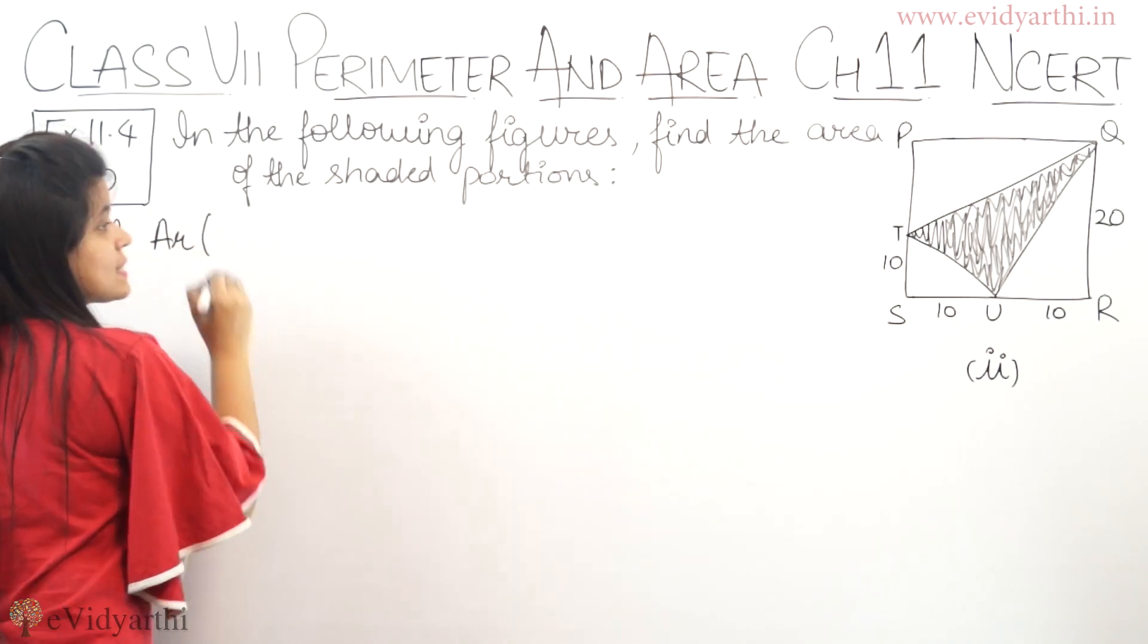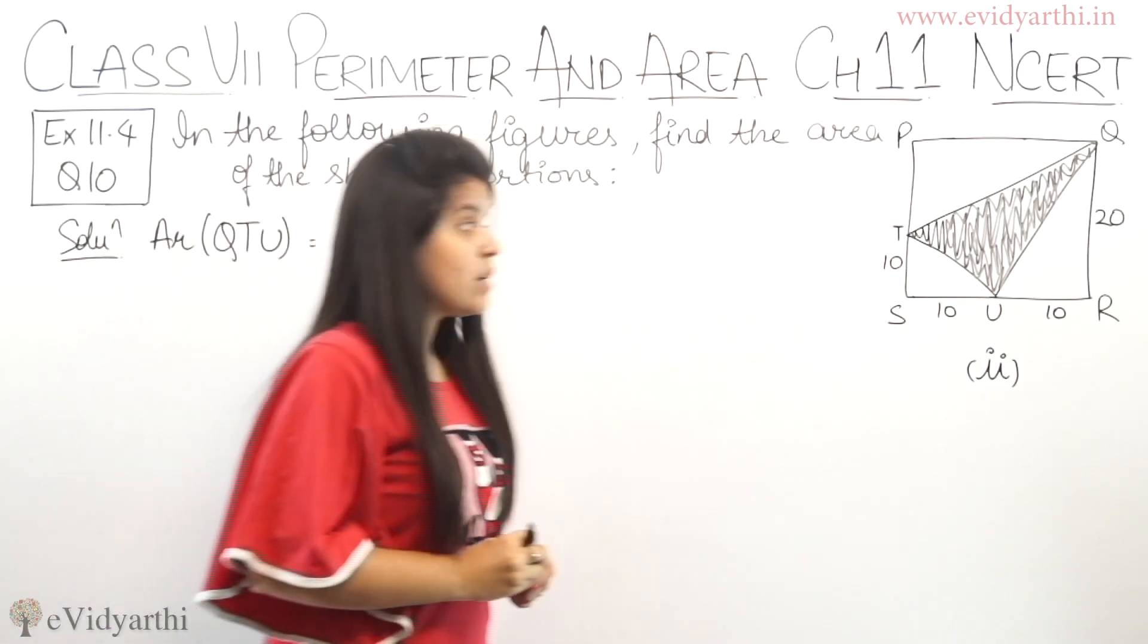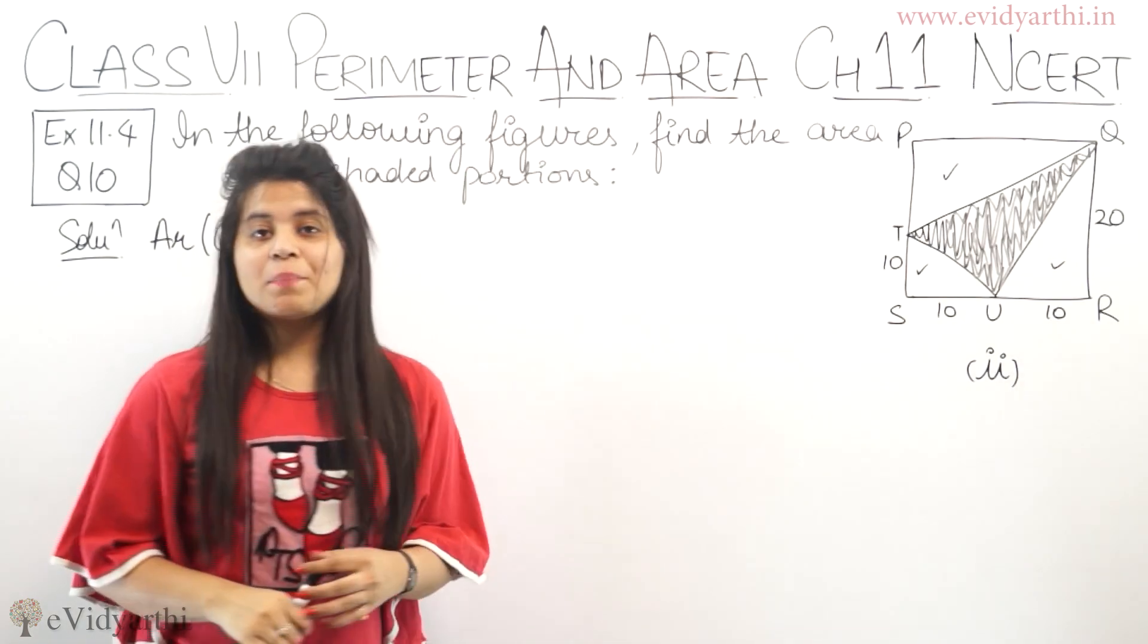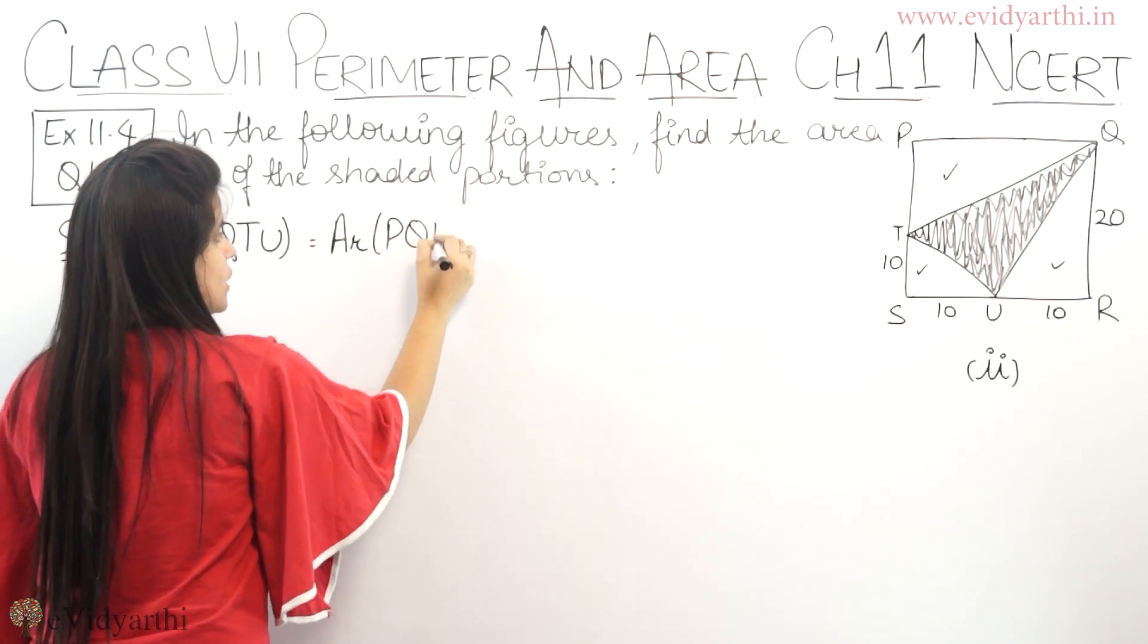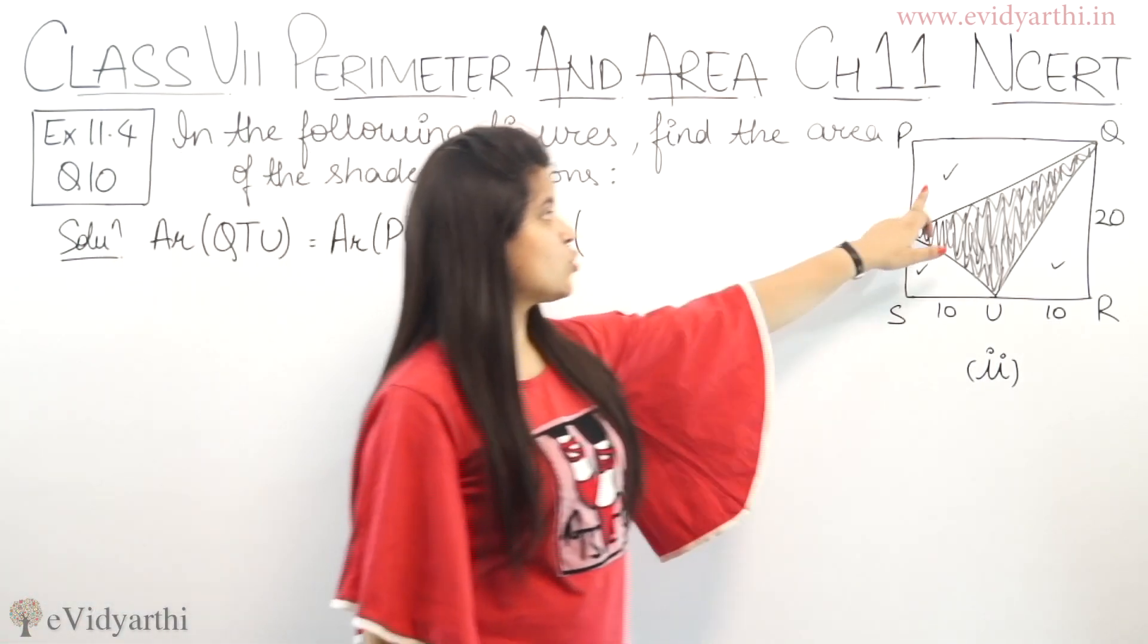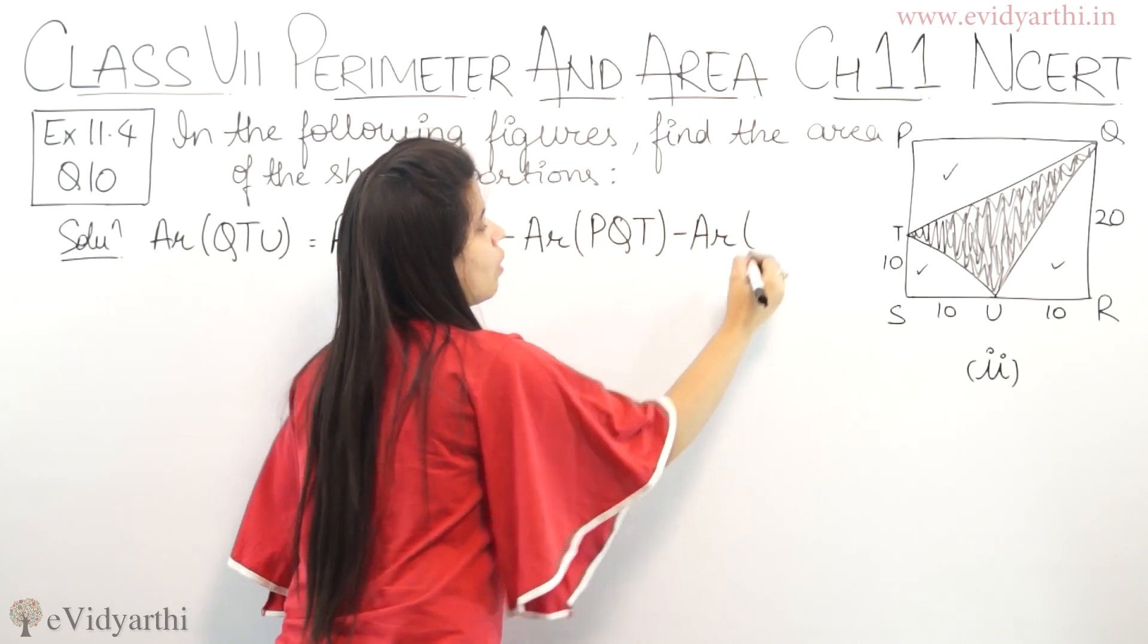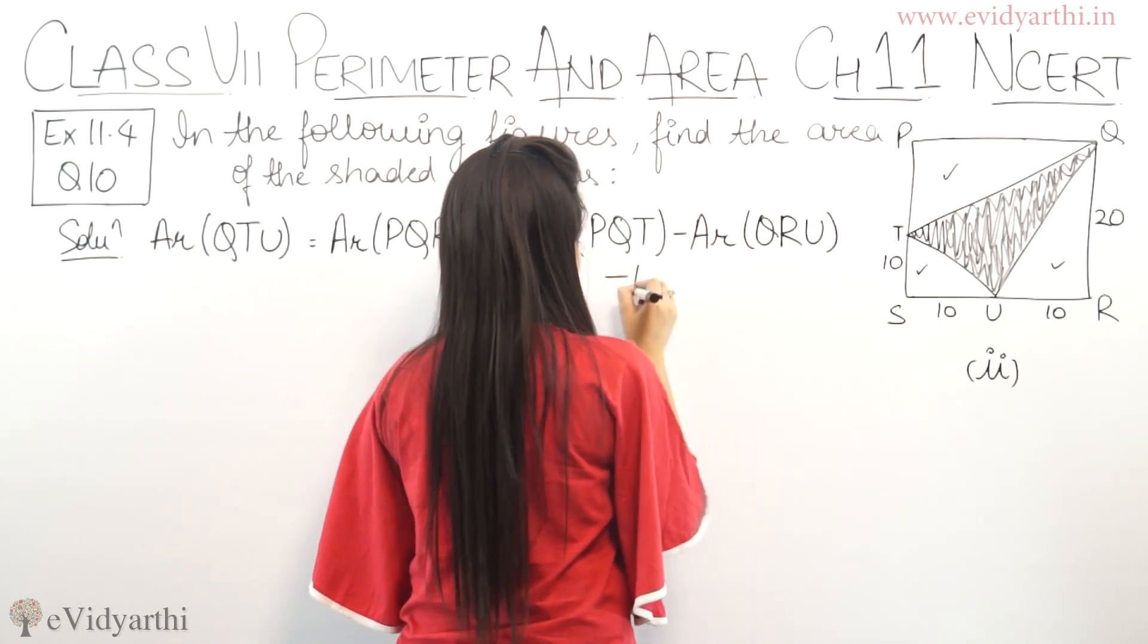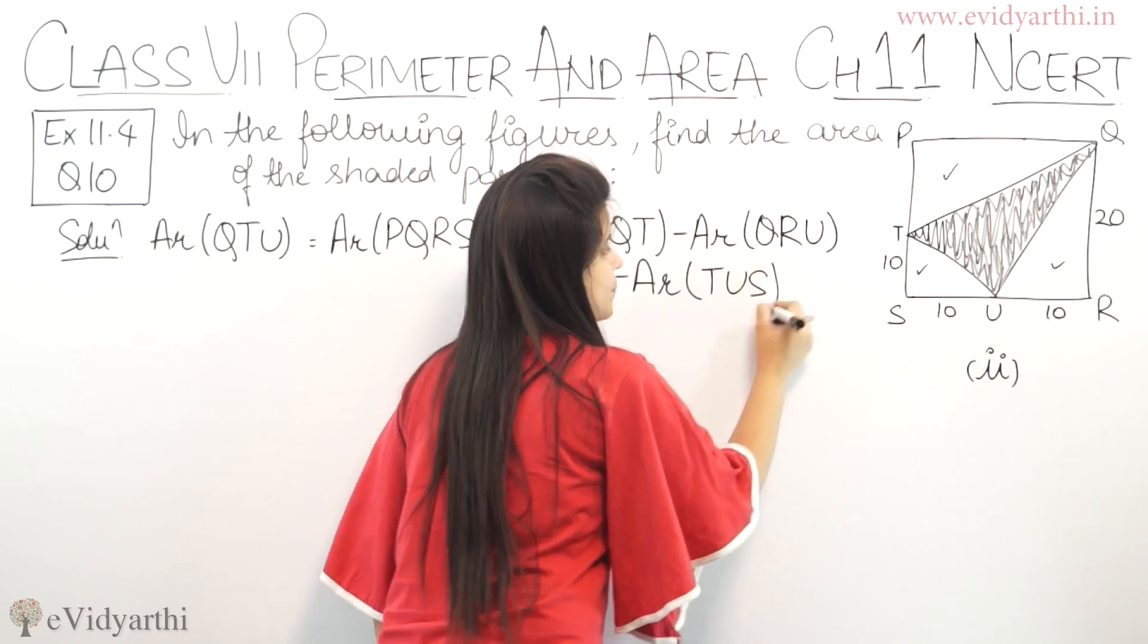We have to find the area of QTU. Area of QTU will be equal to area of rectangle PQRS minus area of triangle PQT minus area of triangle QRU minus area of triangle TUS.